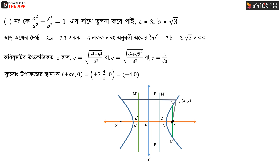You know that the focus is at (ae, 0) and it's also at (-ae, 0). If you have two foci, then you will get plus or minus (ae, 0). If you know that, then you have to get the same number. Our next question is the main question.